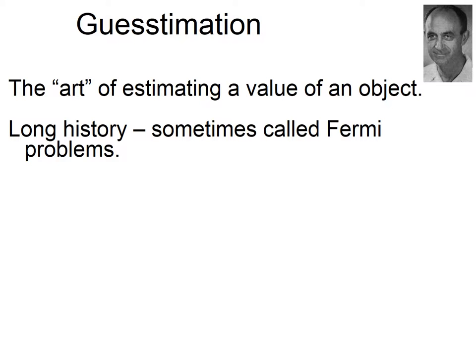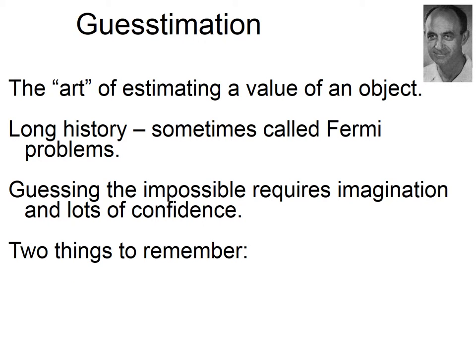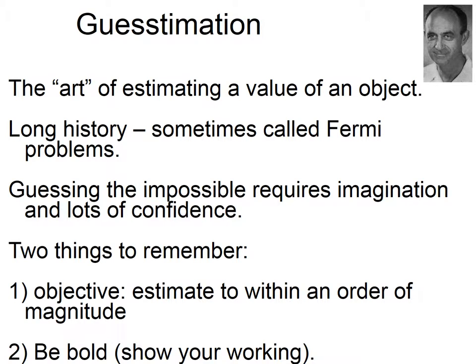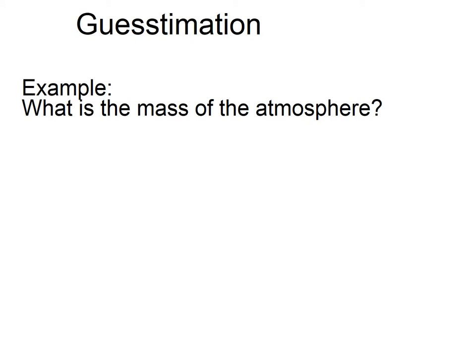We're basically guessing the answer to see if it's about right, and that tells you if you understand how the system works. We're not really looking for the exact answer — we're just looking for whether it's within an order of magnitude, so within a factor of 10. And when you do these things, it's really important to show your working, because if you get a weird answer you can go back through and find out which step had a bad assumption or a flawed model.